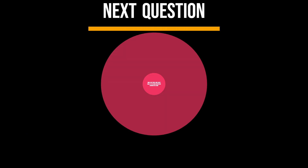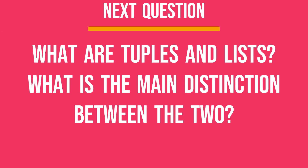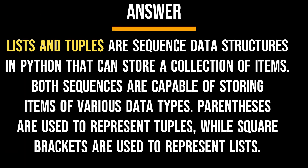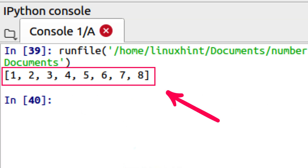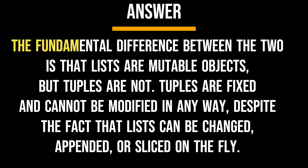What are tuples and lists? What is the main distinction between the two? Lists and tuples are sequenced data structures in Python that can store a collection of items. Both sequences are capable of storing items of various data types. Parentheses are used to represent tuples, while square brackets are used to represent lists. The fundamental difference is that lists are mutable objects, but tuples are not. Tuples are fixed and cannot be modified in any way, despite the fact that lists can be changed, appended, or sliced on the fly.